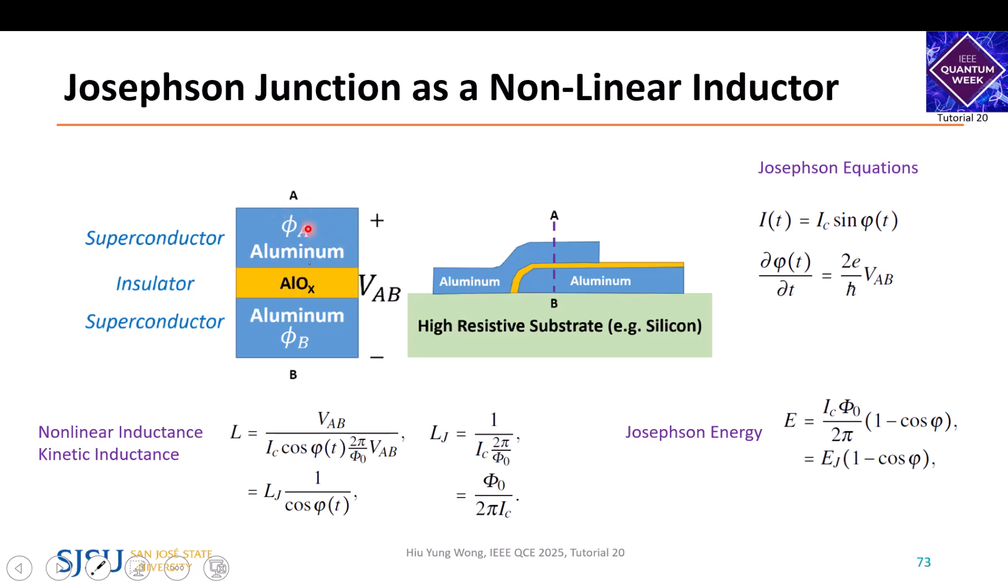They become Cooper pairs, and then just like photons, you can have exactly the same phase between the Cooper pairs. You can describe them by a phase factor. This aluminum is just a macroscopic object you can see—hundreds of micrometers.